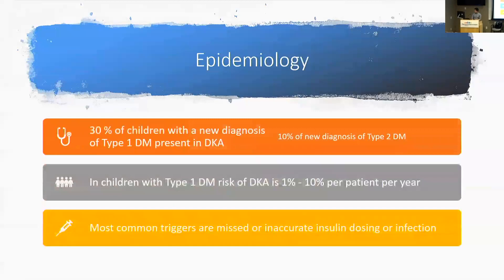About 30% of children coming in with a new diagnosis of type 1 diabetes will have their initial presentation be DKA. About 10% of children presenting with a new diagnosis of type 2 will end up presenting in DKA. We commonly think about DKA in the setting of type 1, but as we're seeing more type 2 diabetes in children at younger ages, we can see more DKA in type 2 diabetics.